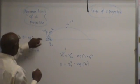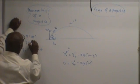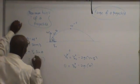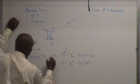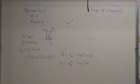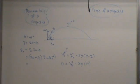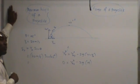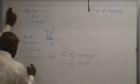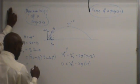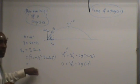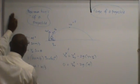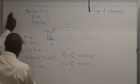What did we say v₀ was? 20 meters per second. So that's 20 meters per second times the sine of 45. What's the sine of 45? It's 0.71. So 20 times 0.71 gives us 14.1 meters per second. That's v₀y.